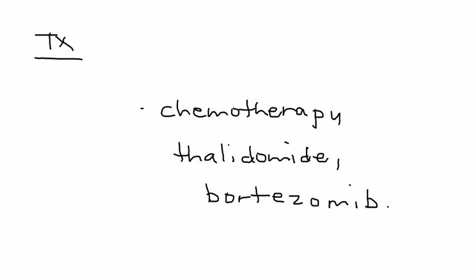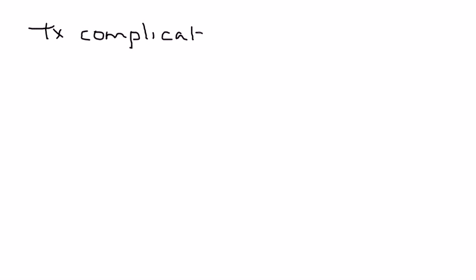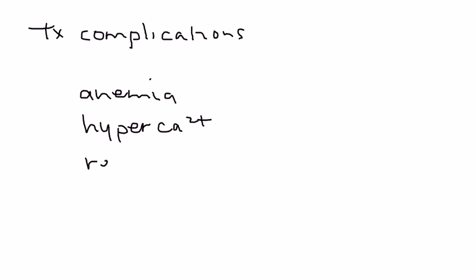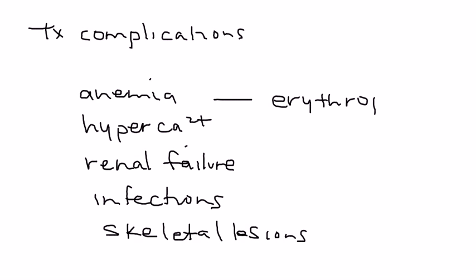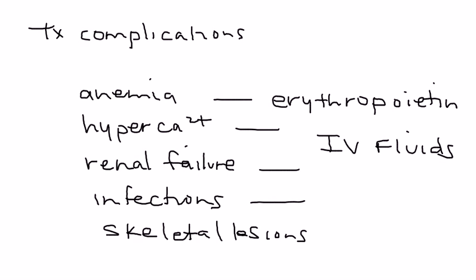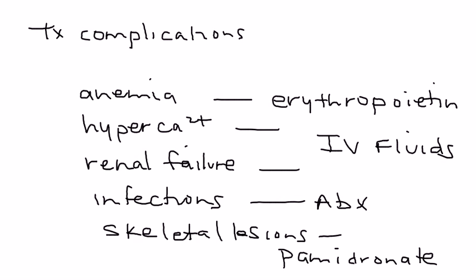More important for licensing exams is treating the complications: anemia, hypercalcemia, renal insufficiency or renal failure, infections, and skeletal lesions. For anemia, you can give erythropoietin as an injection to help build red blood cells. Hypercalcemia and renal failure are treated with IV fluids — hydration is very important. Infections are treated with antibiotics. Skeletal lesions are treated with the bisphosphonate pamidronate, which helps slow bone loss and puts calcium back into the bone.